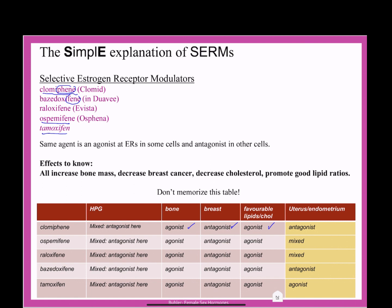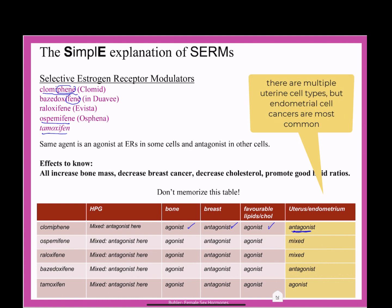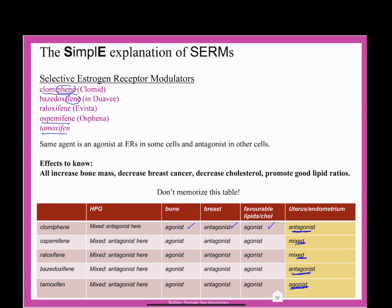The place where SERMs differ is in the uterus and endometrial lining. Clomiphene is an antagonist there, as is bazedoxifene. Tamoxifen is an agonist in the uterus. Ospemifene and raloxifene are mixed — having some activating and some inactivating effects. So the way you use these drugs, and the dangers they carry, are really mediated by what they do at the endometrium. For now, the key takeaway is that any of these SERMs will increase bone mass, decrease breast cancer risk, decrease cholesterol, and promote good lipid ratios. Their effects on the uterus and endometrium are detail you'll learn later. You cannot look at these drugs as either only agonists or only antagonists — that distinction greatly affects the use of each drug.